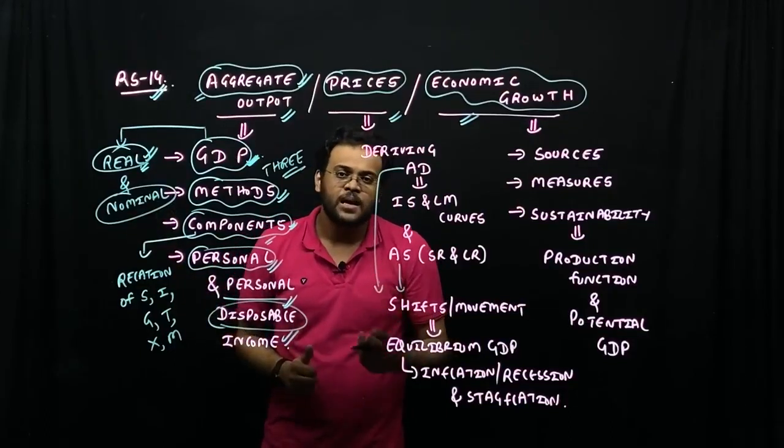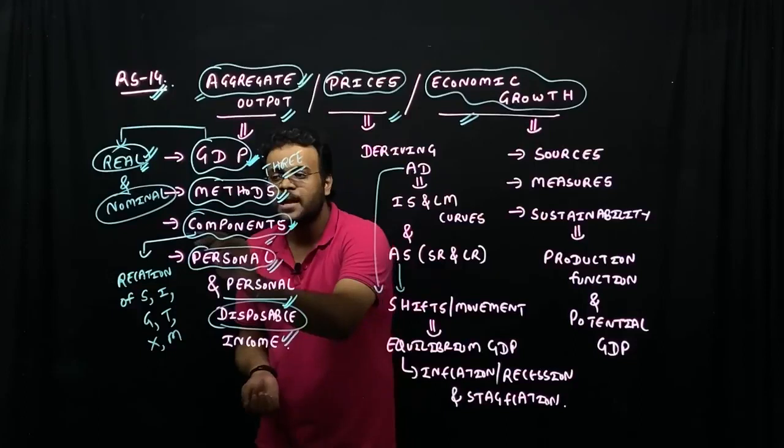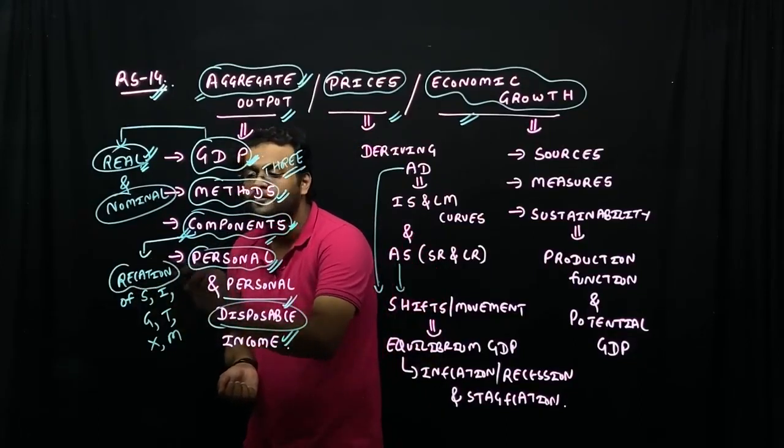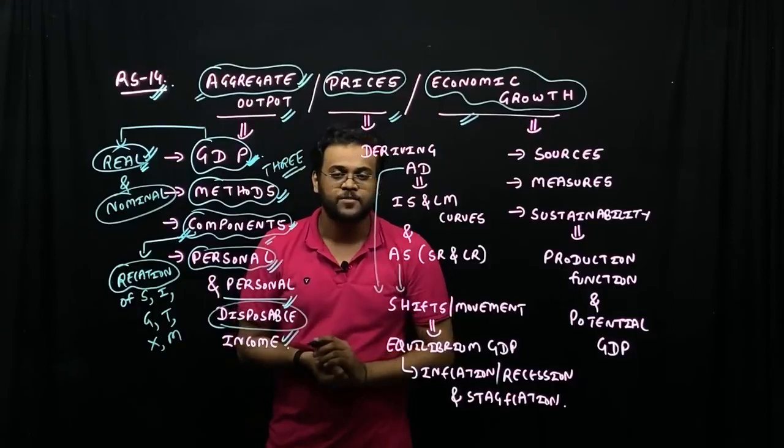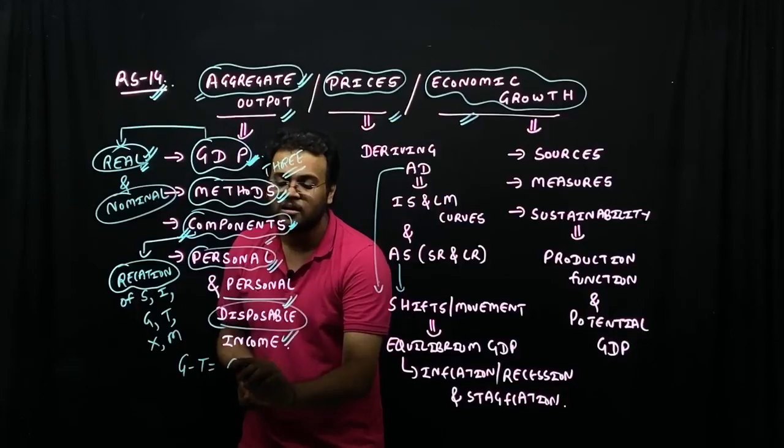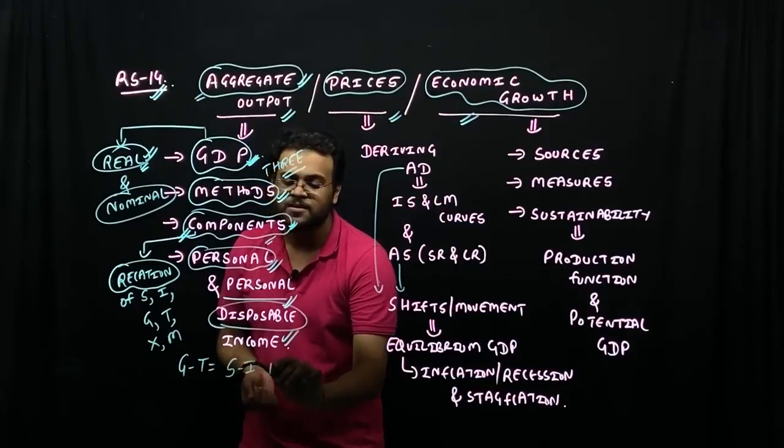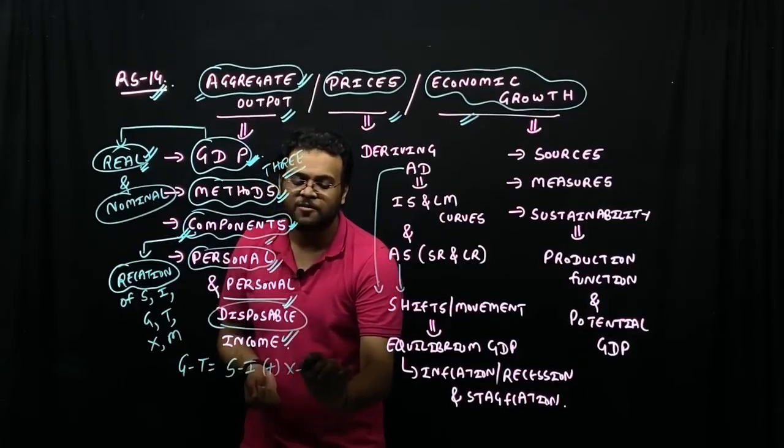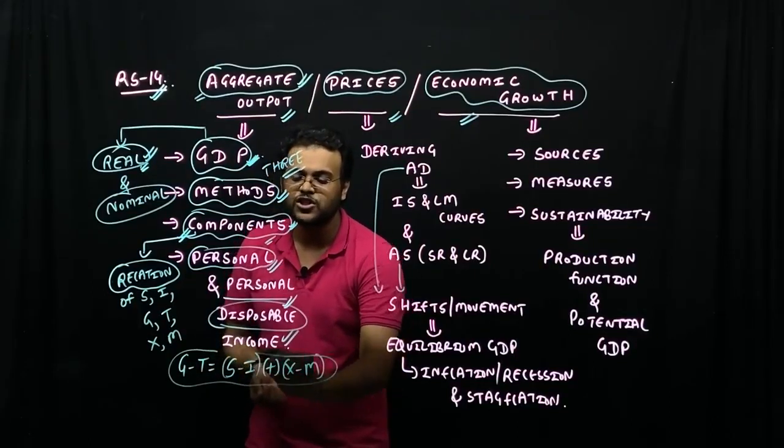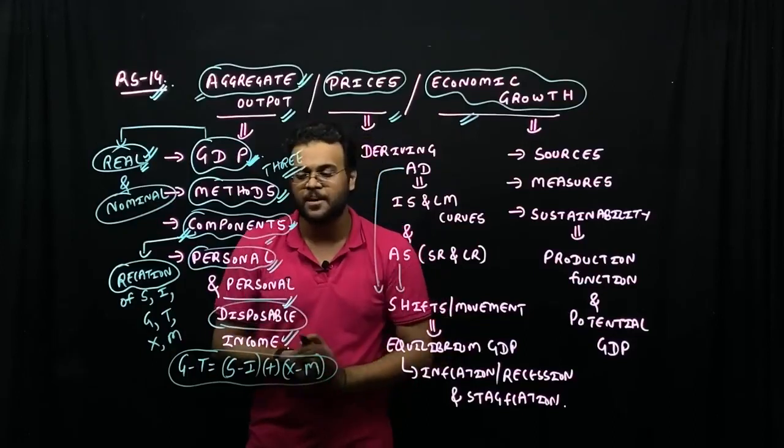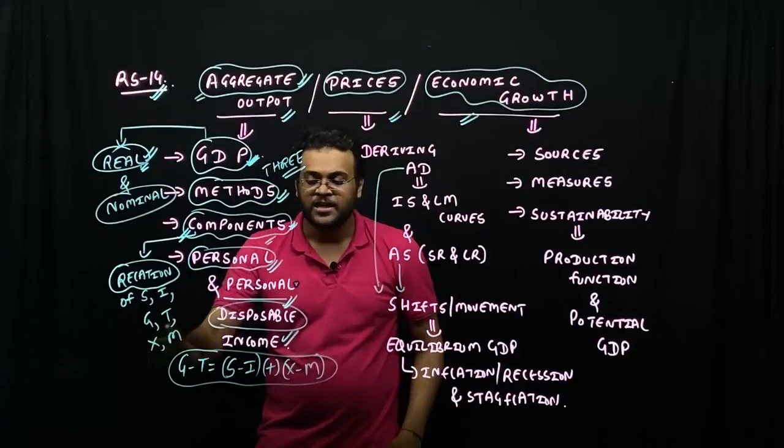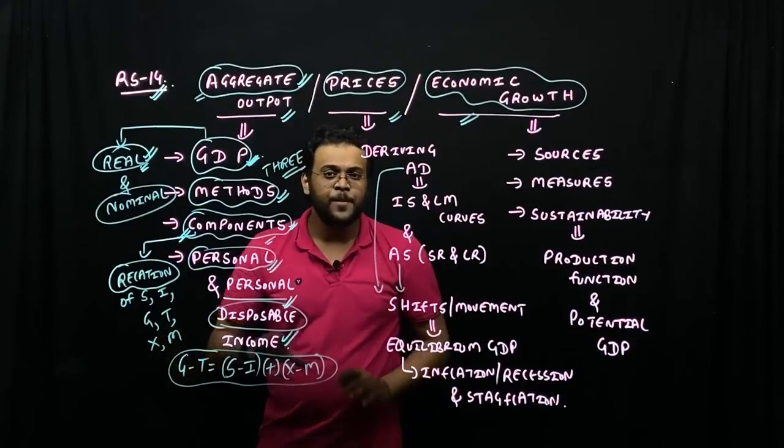Similarly, when we talk about components, we have a very important fundamental relation. As we discuss, government expenditure minus taxes is equal to savings minus investment plus exports minus imports. This is a very important fundamental relation. We discuss this and understand government expenditure, taxes, exports and imports.